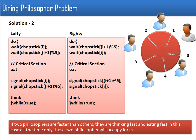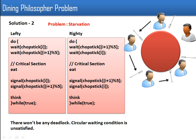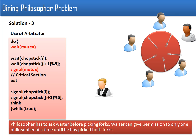Assuming all five philosophers start at the same time, the four regular philosophers will pick their left fork, while the righty philosopher will try to pick his right fork. This means between two neighboring philosophers there will be a situation where only one can hold a shared fork — there won't be any circular waiting, so the deadlock situation is resolved. However, the second problem of starvation remains — some philosophers may still be starving and not get forks to eat.